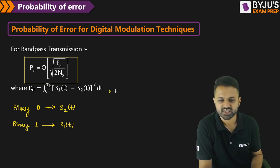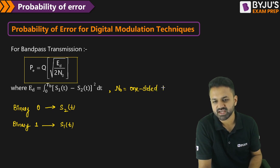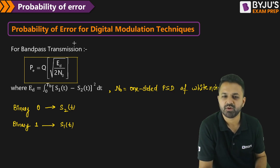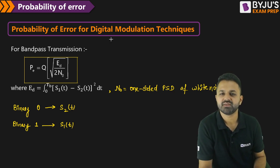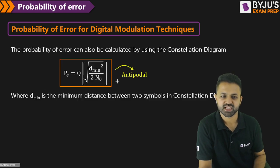The question is: what is N0 here? N0 is nothing but the one-sided power spectral density of AWGN noise. So this is the formula to calculate the probability of error for binary amplitude, frequency, and phase shift key.